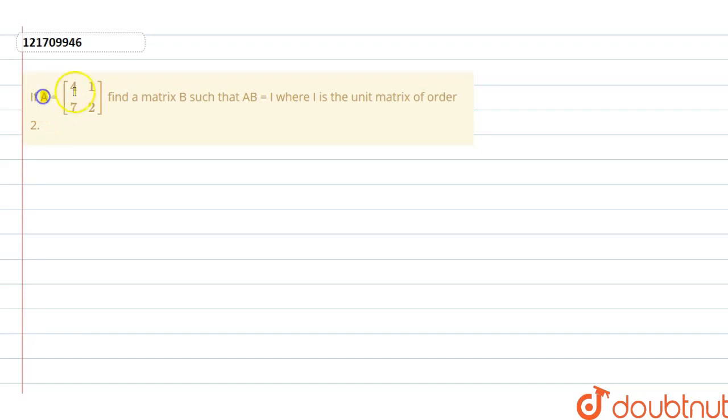Welcome guys. If A equals to 4, 1, 7, 2, find a matrix B such that AB equals to I, where I is the unit matrix of order 2.